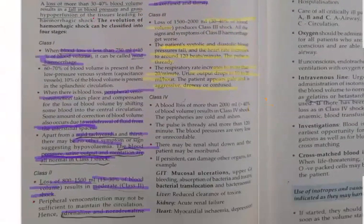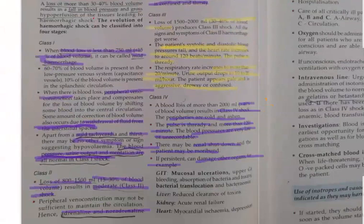Class 4 shock results from blood loss of more than 2000 ml, that is greater than 40% of blood volume. Peripheries are cold, pulse is more than 120 per minute, blood pressure is very low and may be unrecordable. There may be renal shutdown, and if persistent, the patient may be moribund.